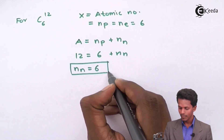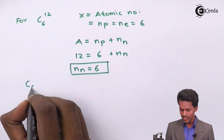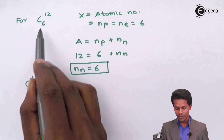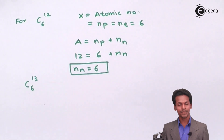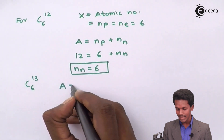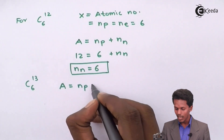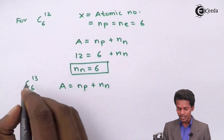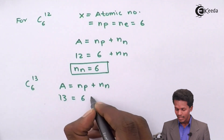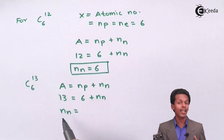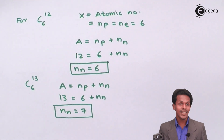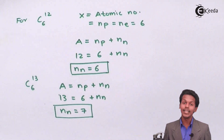When I talk about the isotope of carbon with atomic mass number 13, the number of protons and electrons — the atomic number — remains the same at 6. The atomic mass number A equals NP plus NN, so with A equal to 13 and NP equal to 6, the number of neutrons is 13 minus 6, which equals 7. As we can see, the number of electrons and protons are the same in both cases, but the number of neutrons differs — 6 versus 7 — so these are called isotopes.